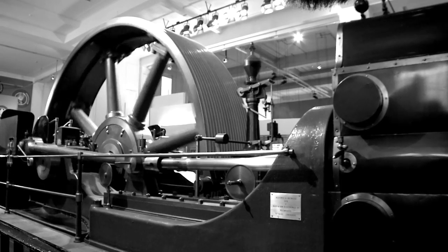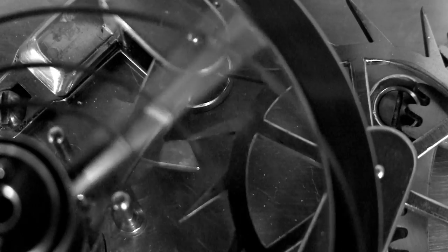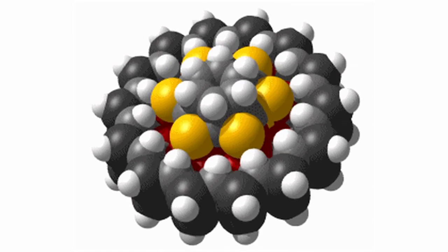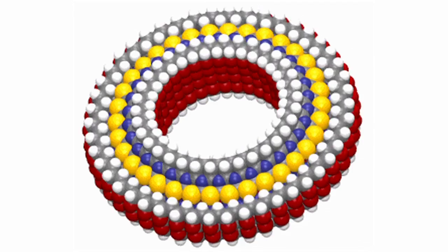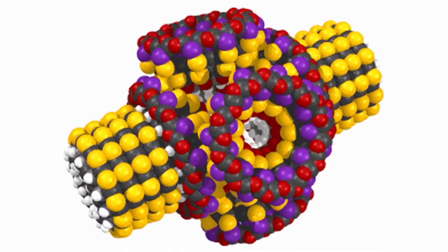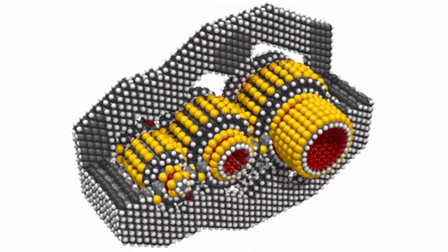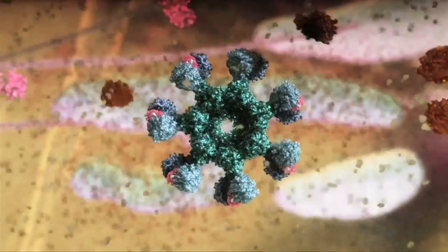Throughout history, we've been making smaller and smaller machines. Now scientists are looking at ways to create machines at the smallest scale possible, using atoms as their building blocks. Some researchers believe that we could construct molecular machines that could make anything we wanted. If this happens, it will revolutionise our lives. We know that molecular machines can work because they're in every cell of our bodies, working away right now — turning food into energy, fixing damage, keeping you warm and making new cells. You are already a masterpiece of molecular nanotechnology.